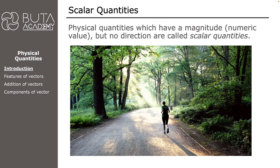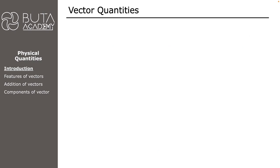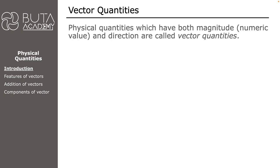On the other hand, sometimes we will not be able to express ourselves clearly without mentioning both a numeric value and a direction together — and this is when we will use vectors. Vectors are physical quantities which have both magnitude (or numeric value) and direction. Let's assume that the image on the screen is our house and someone has asked where our school is located.